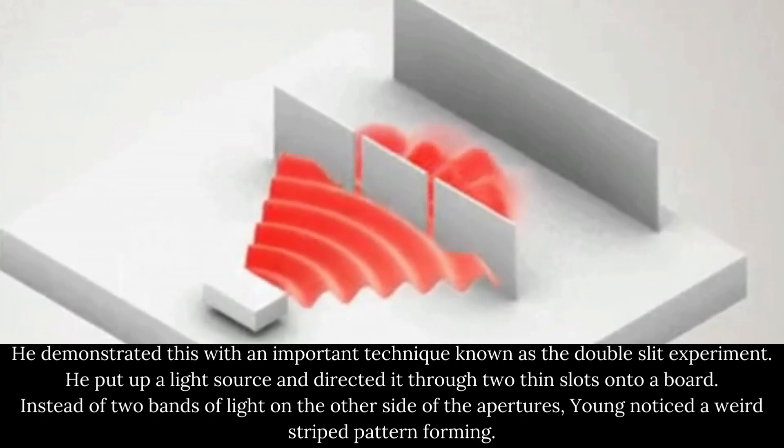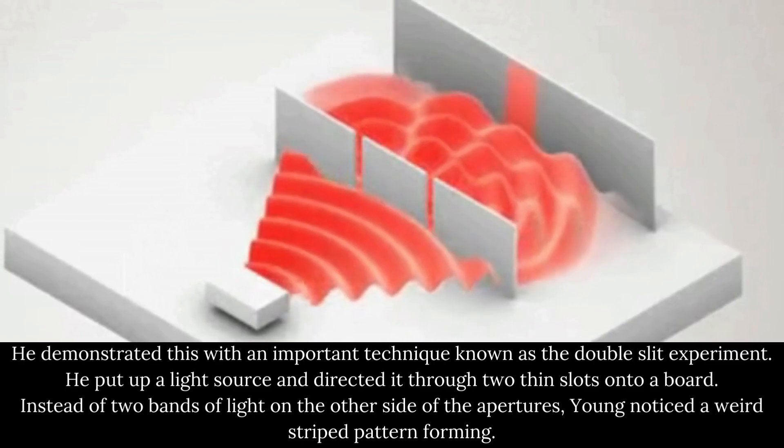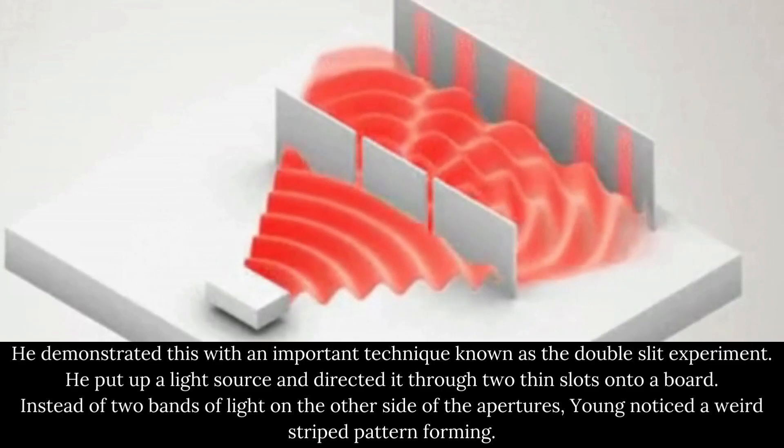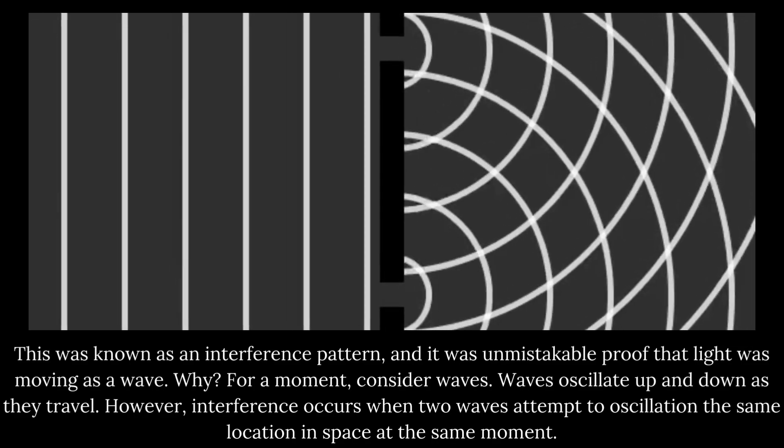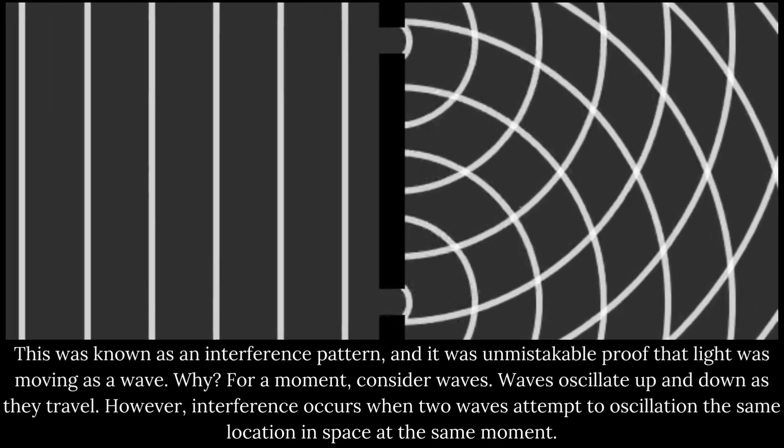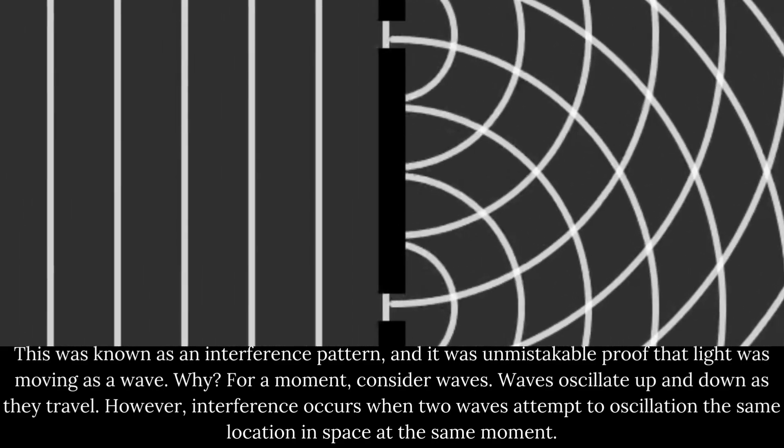He set up a light source and directed it through two thin slots onto a board. Instead of two bands of light on the other side of the apertures, Young noticed a weird striped pattern forming. This was known as an interference pattern, and it was unmistakable proof that light was moving as a wave.